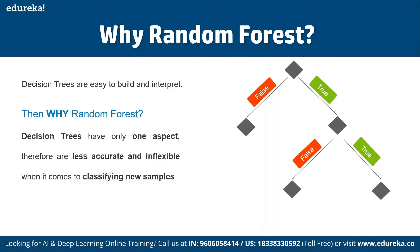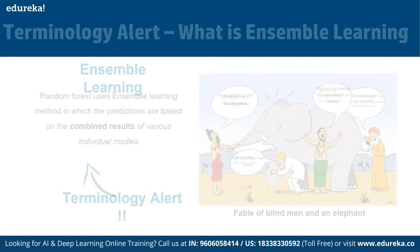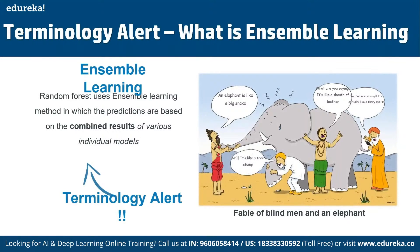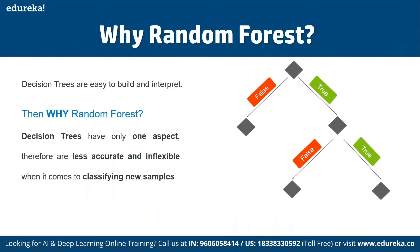The forest is a collection of decision trees trained using the bagging method. To understand random forest in depth, we need to understand how decision trees work. Let's say we want to buy a house but are unable to decide which one. We consulted a few agents who gave us a list of parameters to consider: price of the house, locality, number of bedrooms, parking space, available facilities. These are known as predictor variables used to find the response variable.